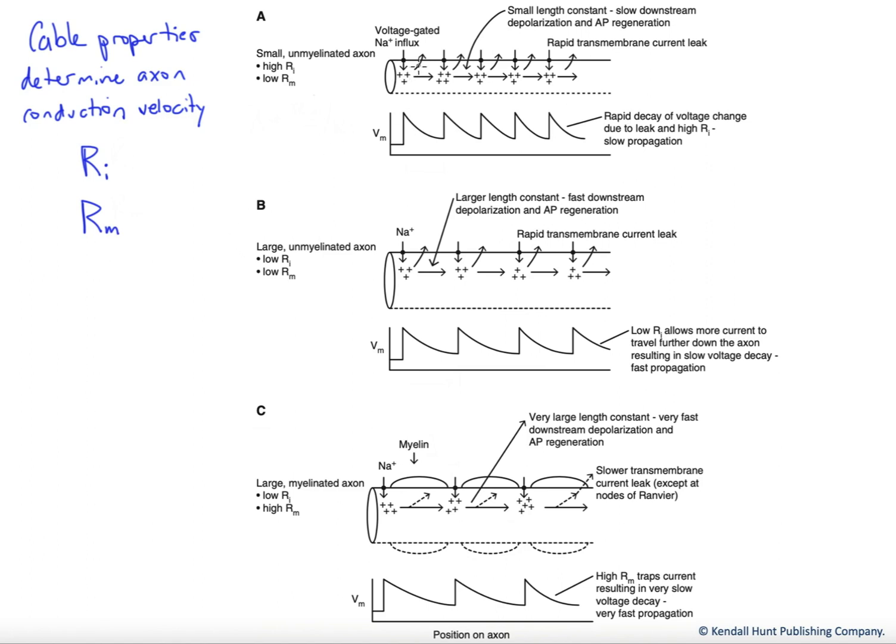And those two are indicated by these arrows here. So this is current flow along the axon, and there's a resistance to current flow in that direction. And of course, this one would be current flow out of the cell, and it would be opposed by, resisted by, resistance of the membrane to current flow.